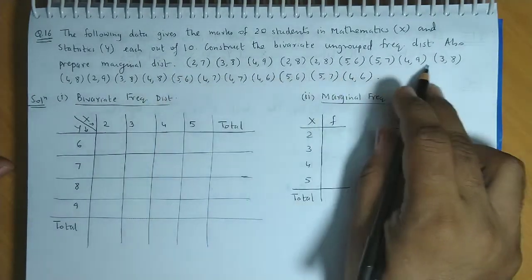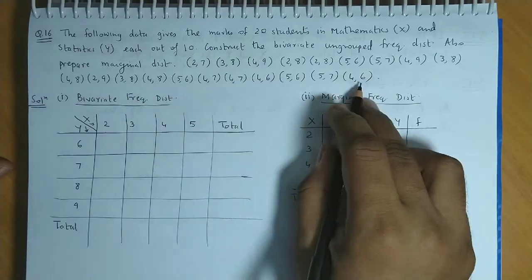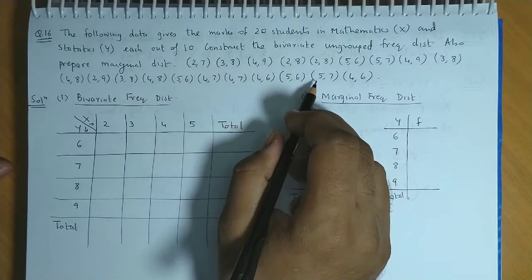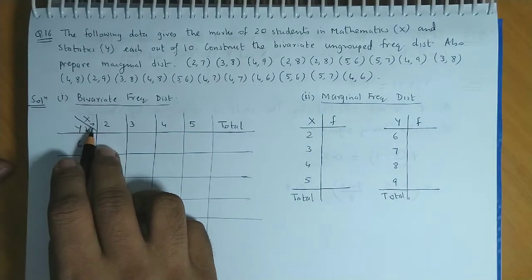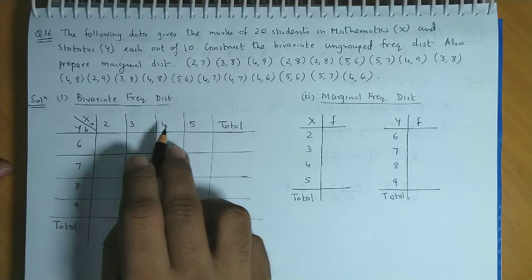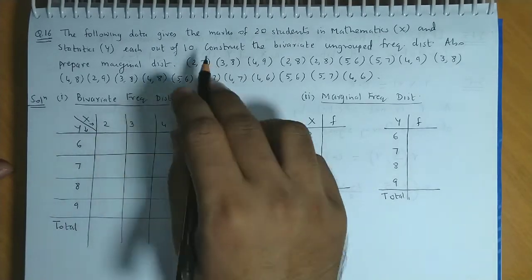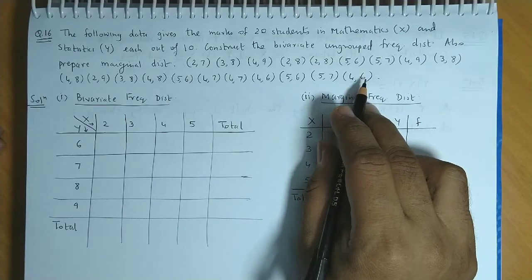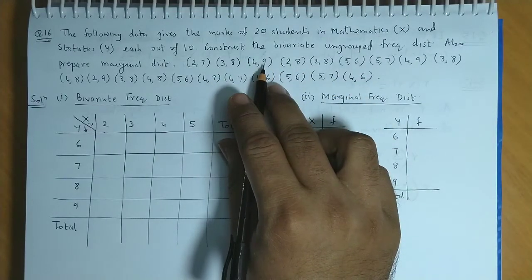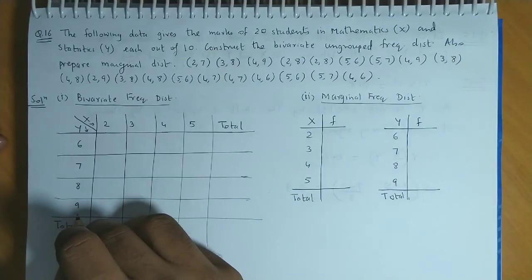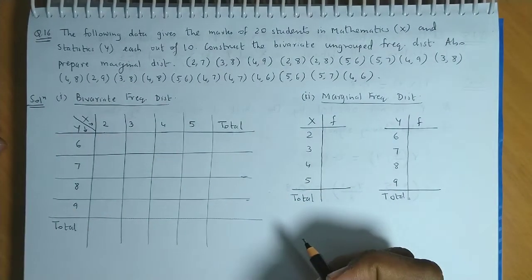Now, if you look at the x values in each of the pairs, the smallest x value is 2 and the largest x value is 5. So the x entries we see are from 2 to 5: 2, 3, 4, 5. And if we observe the y values, the least value is 6 and maximum y value is 9. So the y entries we see are 6 to 9. Now we'll complete this table with tally marks.